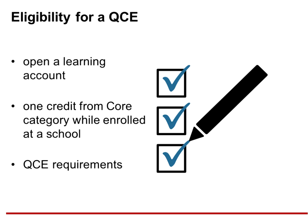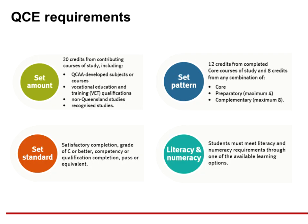Students need to ensure that they have an open learning account with the QCAA. One credit from the core category of learning must be accrued while the student is enrolled at a school. The four requirements of the QCE are that students must accrue learning to the set amount at the set standard in a set pattern while meeting literacy and numeracy requirements.